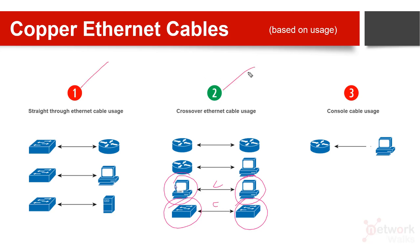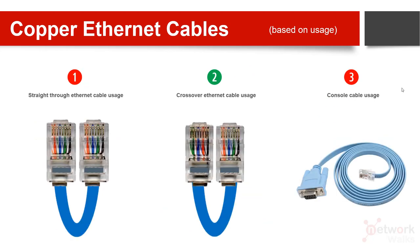The third type is a special type used just for configuration, not for data transfer. Here we connect a laptop or a temporary device to a router or any other network device to perform configuration. This type of cable is called a console cable. Let me show you how they look physically.